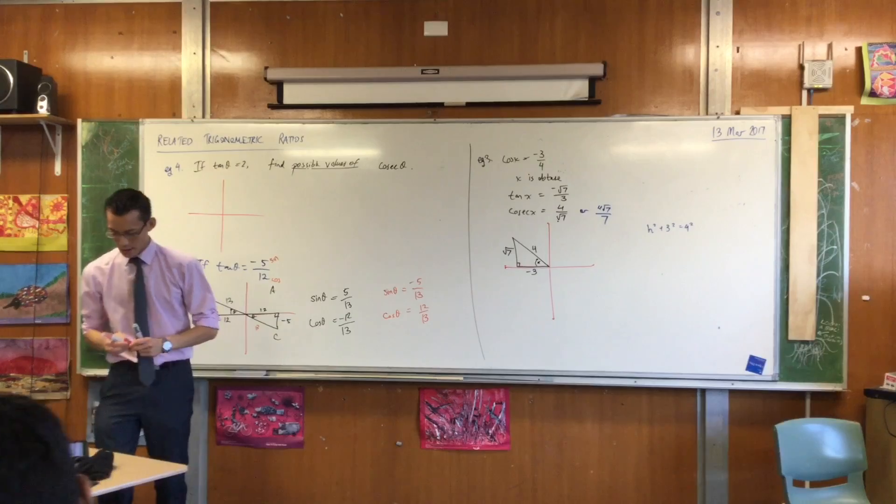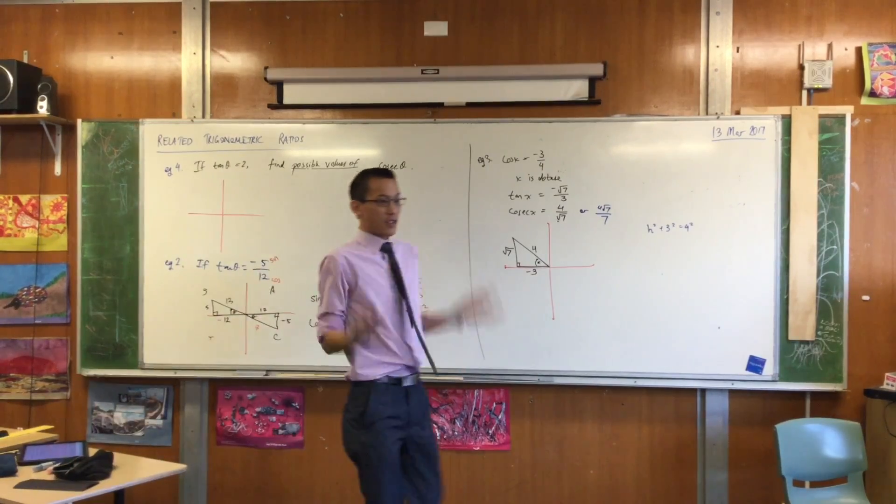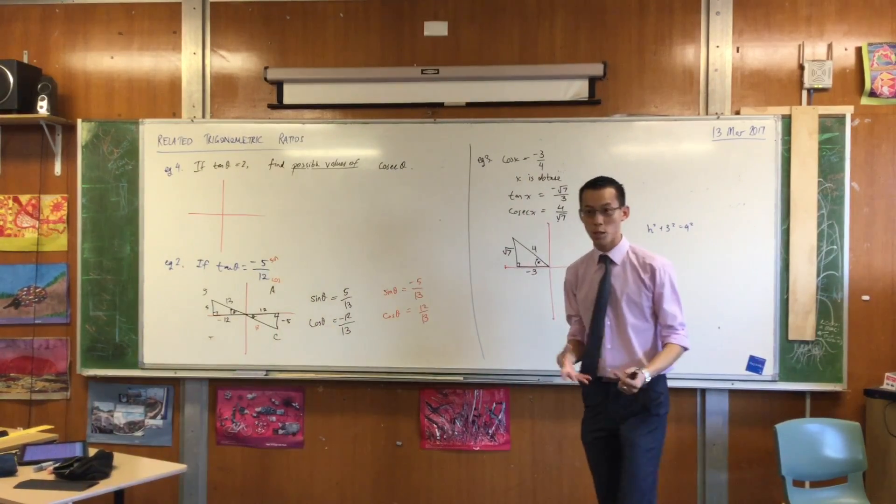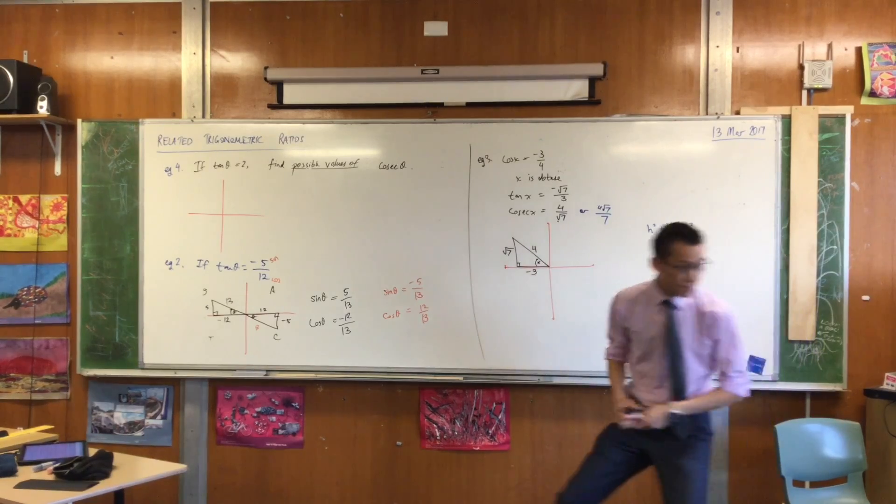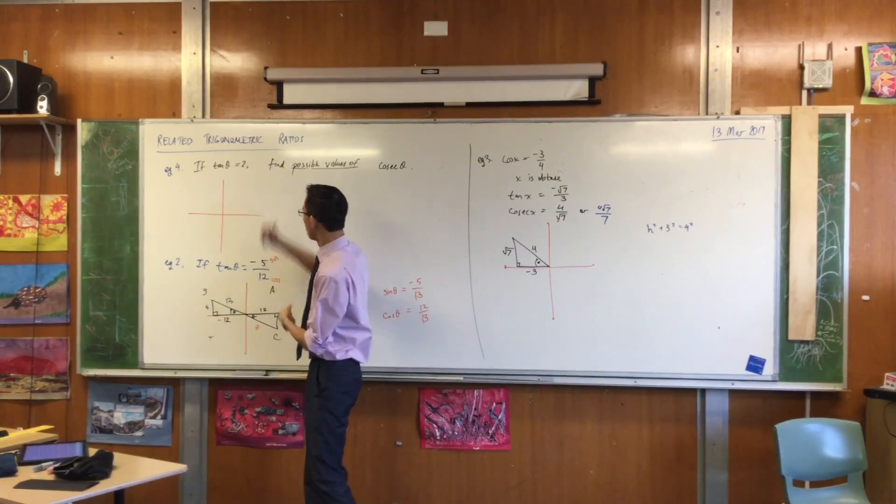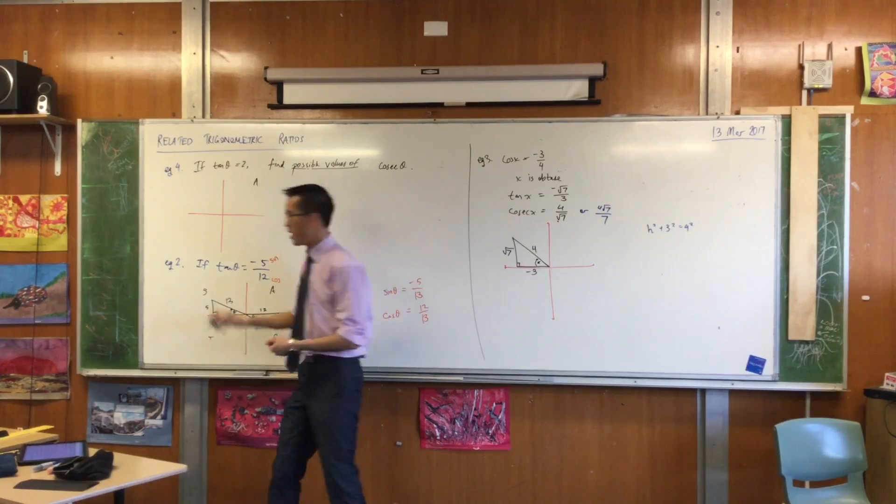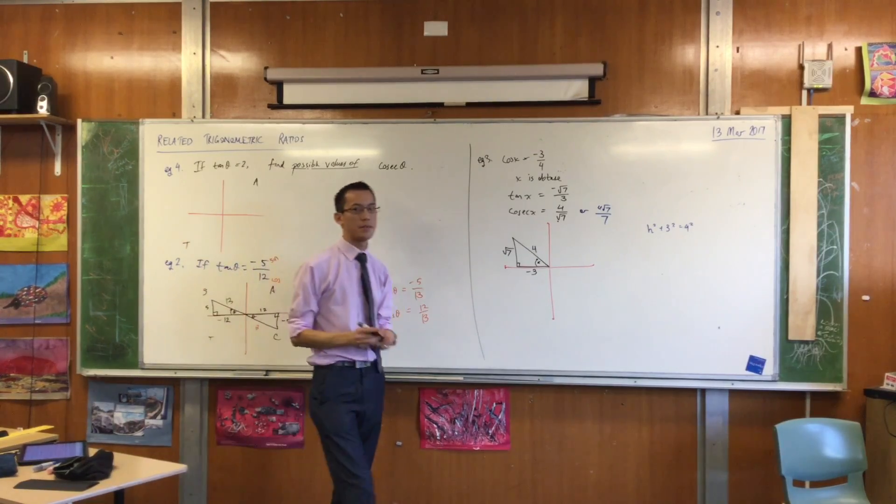I draw my quadrants again. Unlike in the previous questions, I don't know which quadrant I'm in. There are two possibilities. Which ones? Third and first. Yeah. Third and first. Because in this one they're all positive, and in this one tan is positive, and that's the one I'm dealing with.